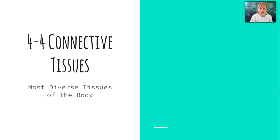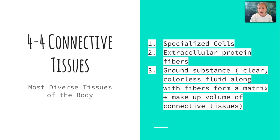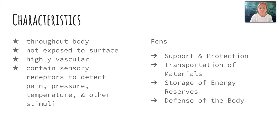Connective tissues are the next type we're going to talk about — they're the most diverse in the body. They're made up of specialized cells, extracellular protein fibers, and a ground substance that is a clear, colorless fluid. Together, the fibers and ground substance form a matrix that makes up the volume of the connective tissue. Some characteristics: they're found throughout the body, not exposed to any surface, and are highly vascular — meaning they have a lot of blood vessels. They contain sensory receptors to detect pain, pressure, temperature, and other stimuli. Their functions include support and protection, transportation of materials, storage of energy reserves, and defense of the body.